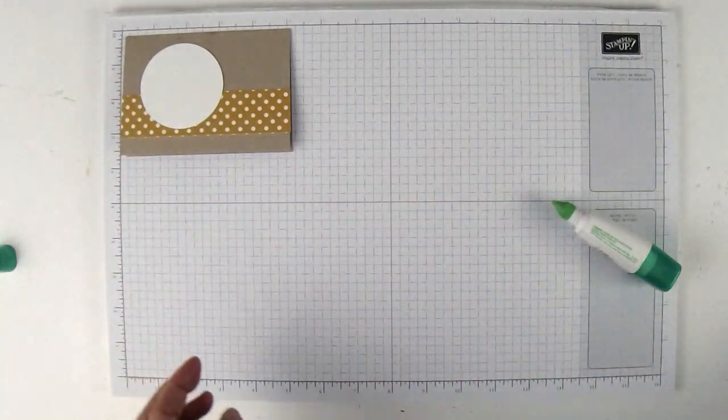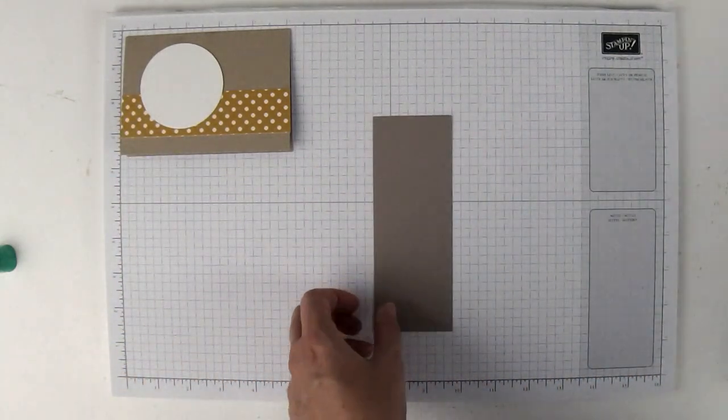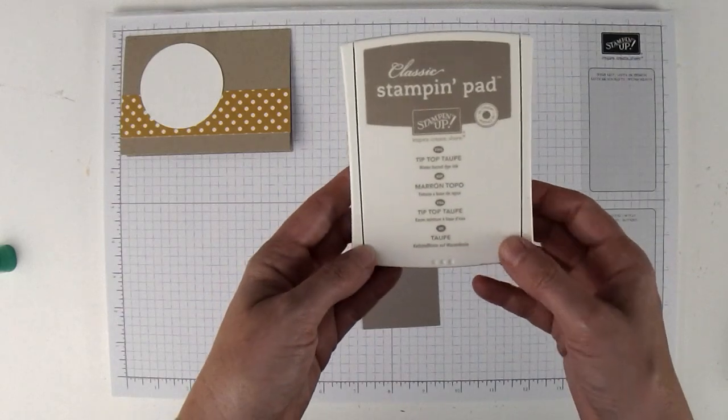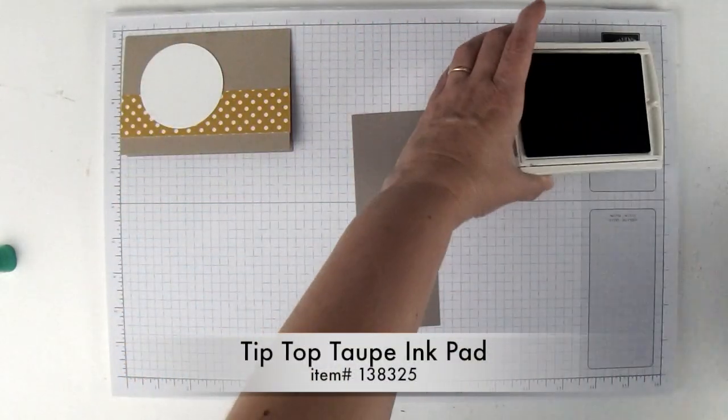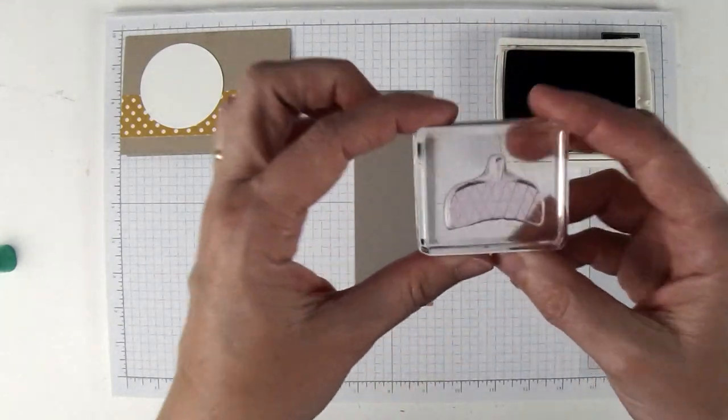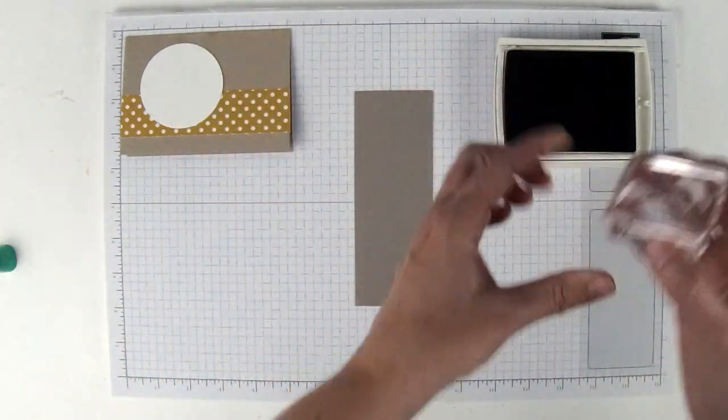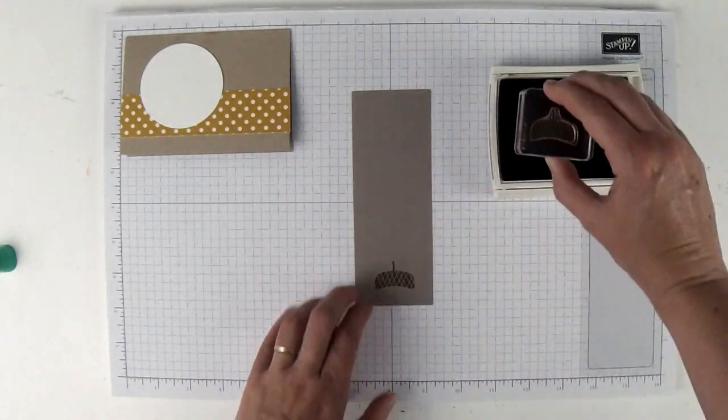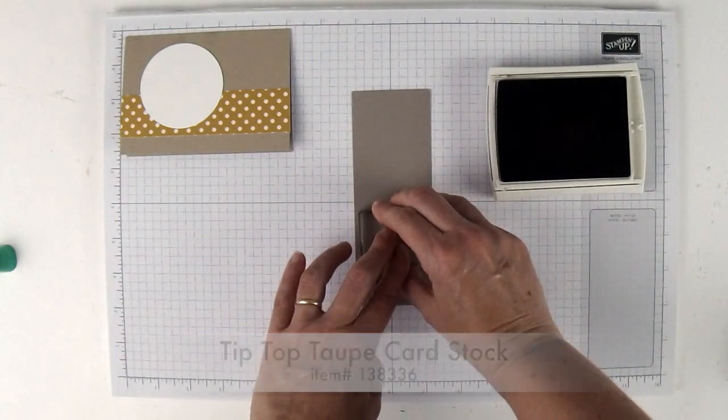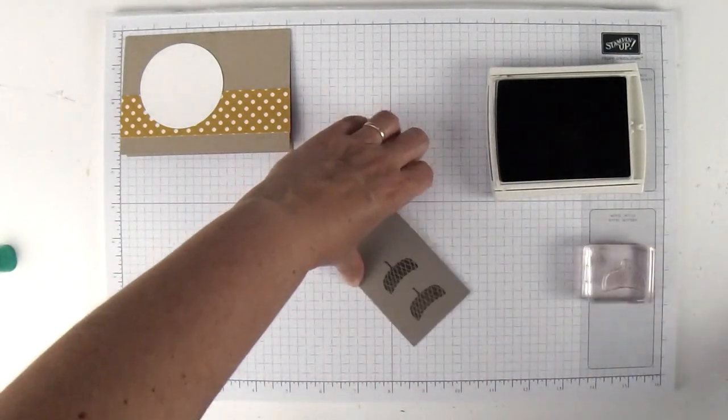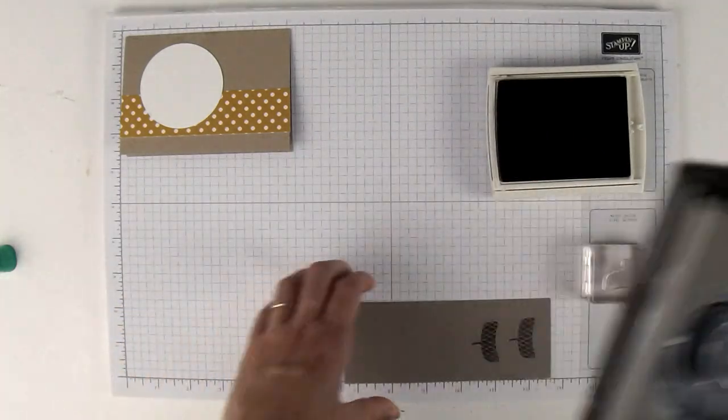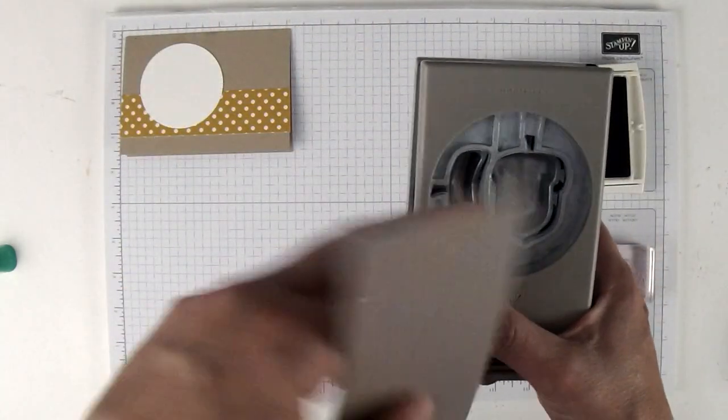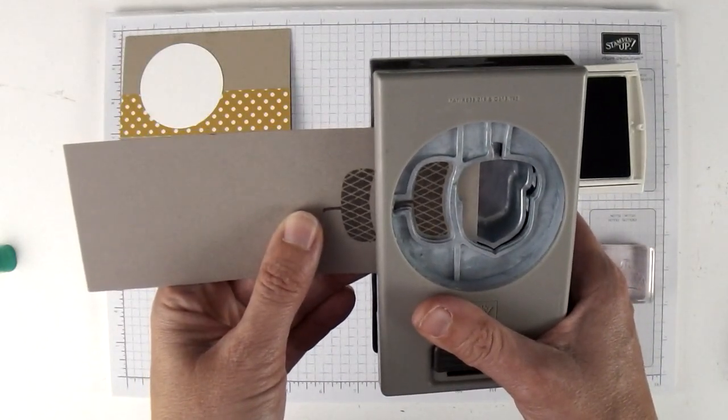Now we're going to do some punching and stamping. To keep with the theme of the in colors, I'm using the tip top taupe ink pad, which I thought would make a great acorn color. I'm using this cross hatched acorn topper. I'm going to ink this up on my tip top taupe and stamp it once and stamp it twice.